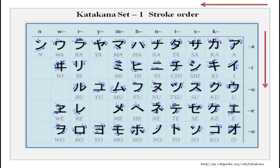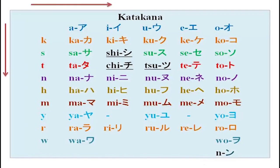Hiragana is used for words of Japanese origin and also to change tenses of verbs and to show different verb forms. Katakana is for foreign words. You can see the katakana chart very clearly in different colors — it is easy to memorize.